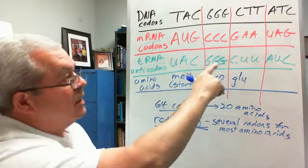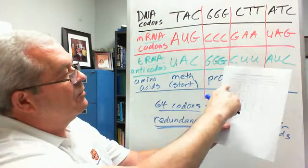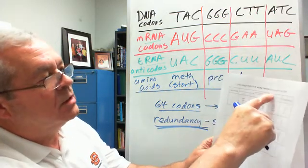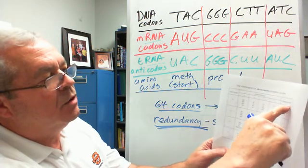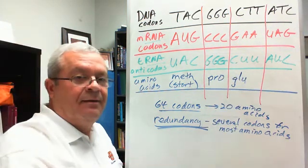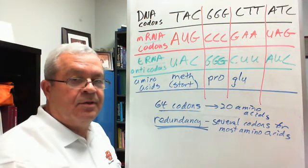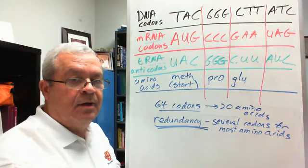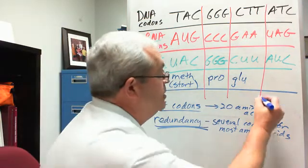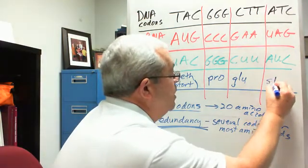Anticodon AUC. All right, first base A, second base U across the top here, and third base C, that brings us to what? Oh my goodness, that brings us to a codon that brings us where? Not to an amino acid, but to what? To STOP. And so there's a STOP codon.